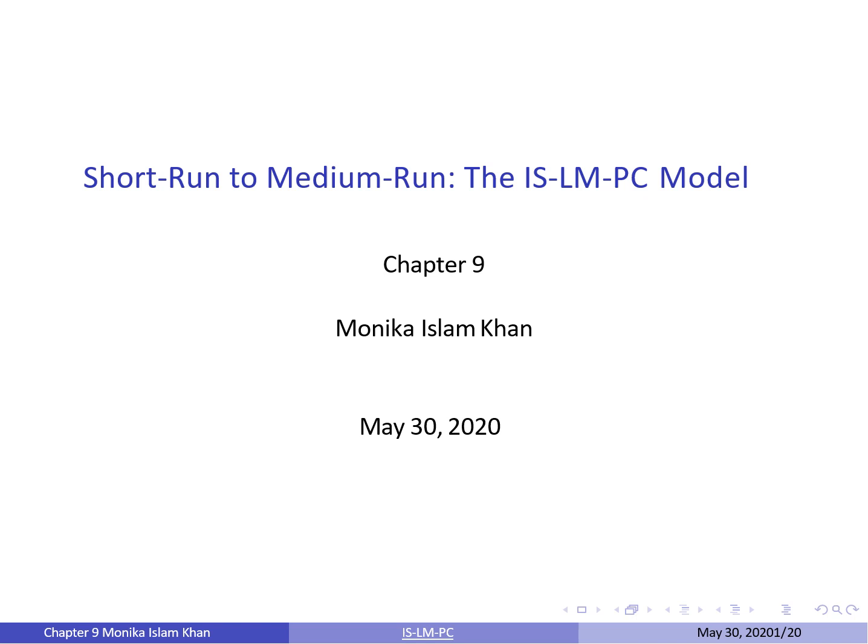From Chapters 3 to 6, we looked at equilibrium in the goods and financial markets and saw how output is determined by demand in the short run. In Chapters 7 and 8, we looked at equilibrium in the labor market and derived how unemployment affects inflation. We now put the two parts together and use it to characterize the behavior of output, unemployment, and inflation, both in the short and the medium runs.